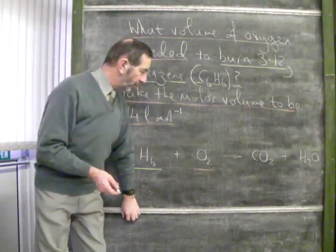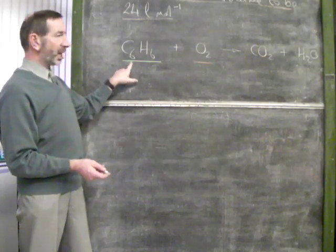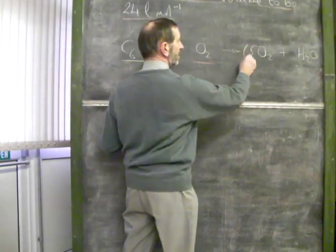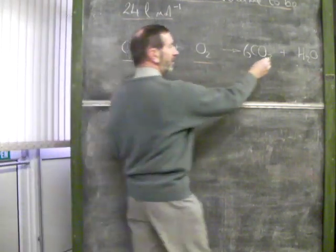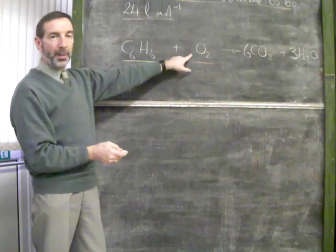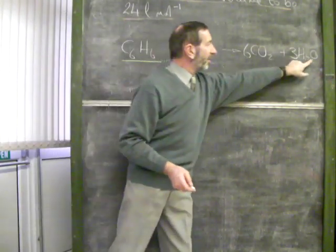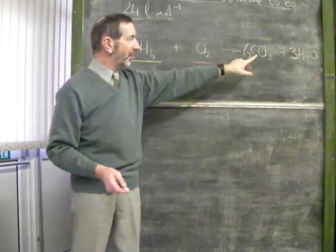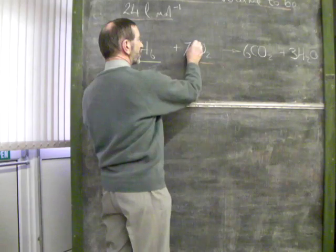So, we're given an equation. Let's balance the equation. 6 carbons to begin with, 6 carbons at the end. 6 hydrogens to begin with, we're finished with 6 hydrogens in total. We need now to balance oxygens. There are 12 oxygens here, and a further 3. That's 15 oxygens. If we end with 15, we must start with 15, which means we can put in 7 and a half.